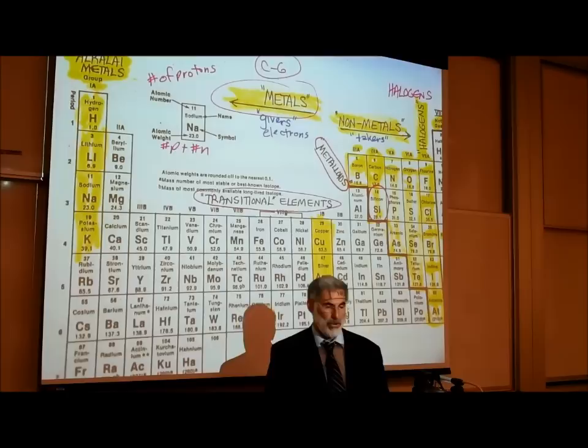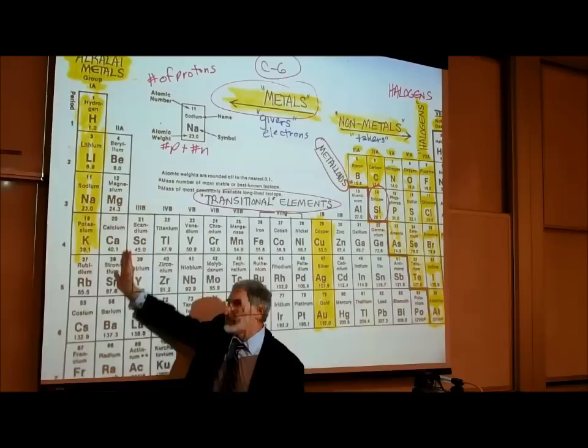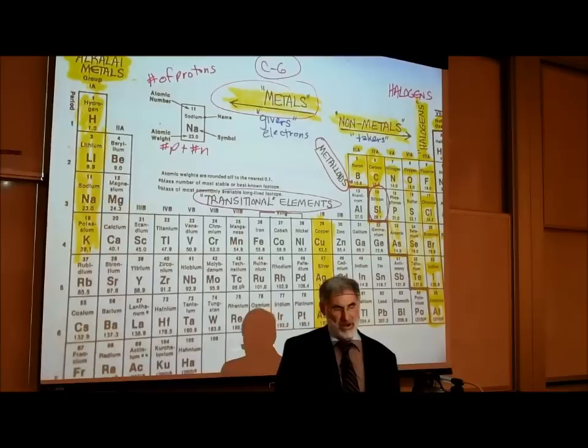The elements in column two — beryllium, magnesium, calcium, and strontium — all have similar chemical properties because each of them has two electrons in their outer orbit.